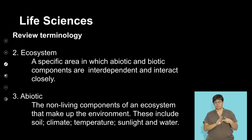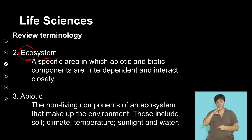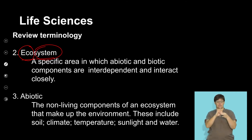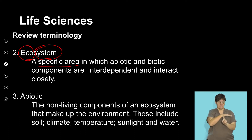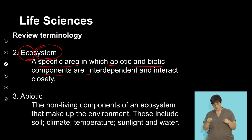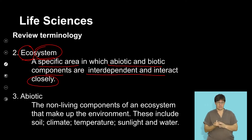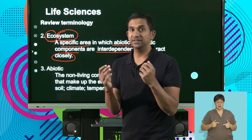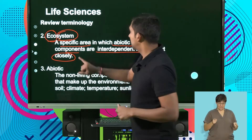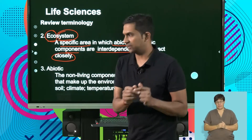The next concept is ecosystems. Eco refers to ecology, and systems refers to an association. This refers to the specific area in which the abiotic and the biotic components are interdependent and interact with each other. It shows you the interaction between the non-living and the living components in their habitat or in their specific area.